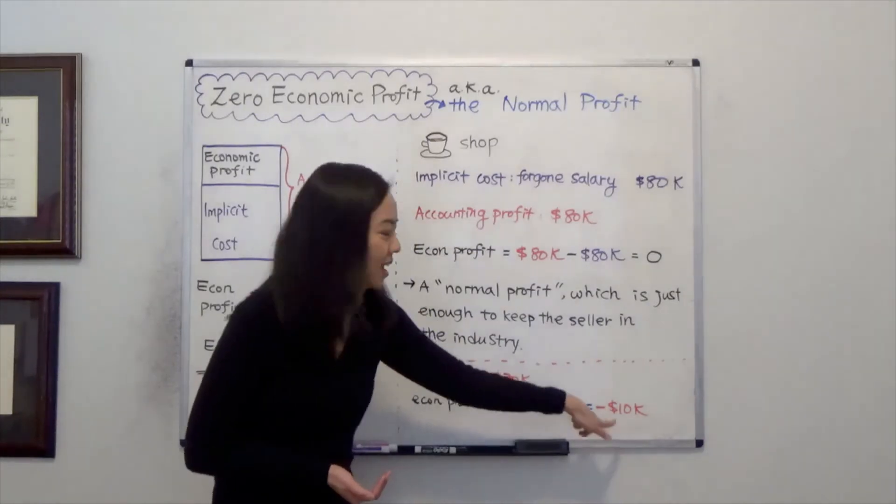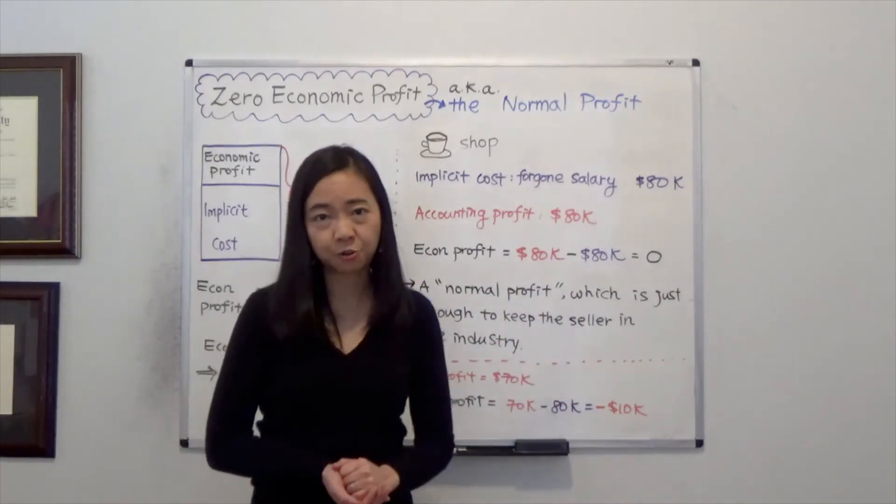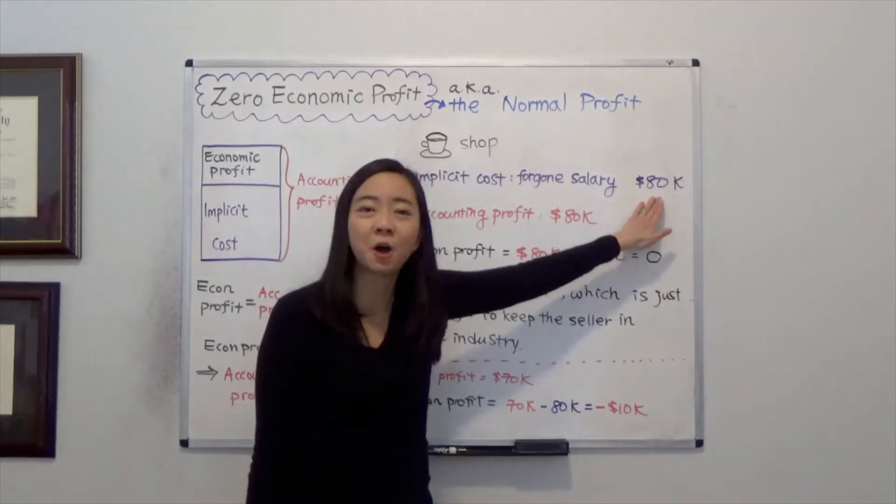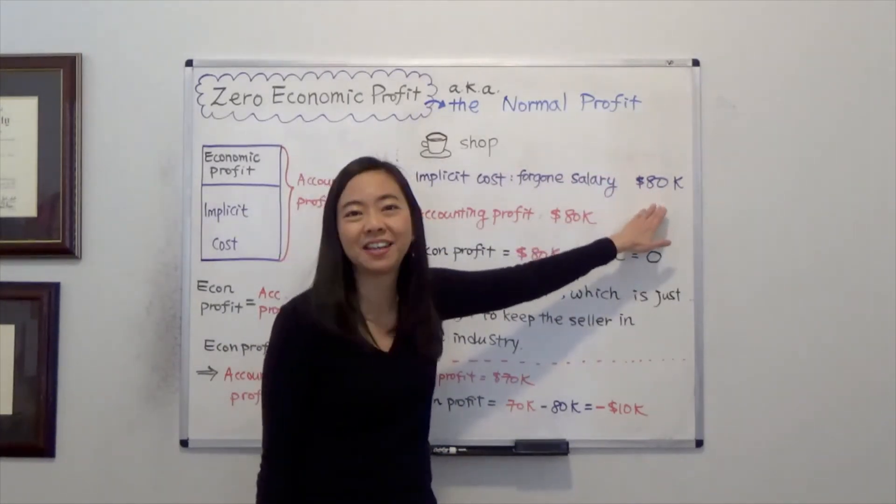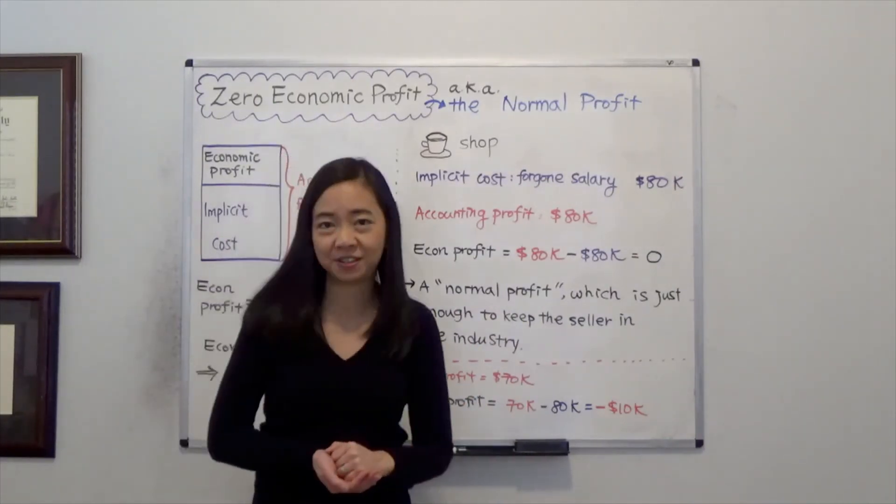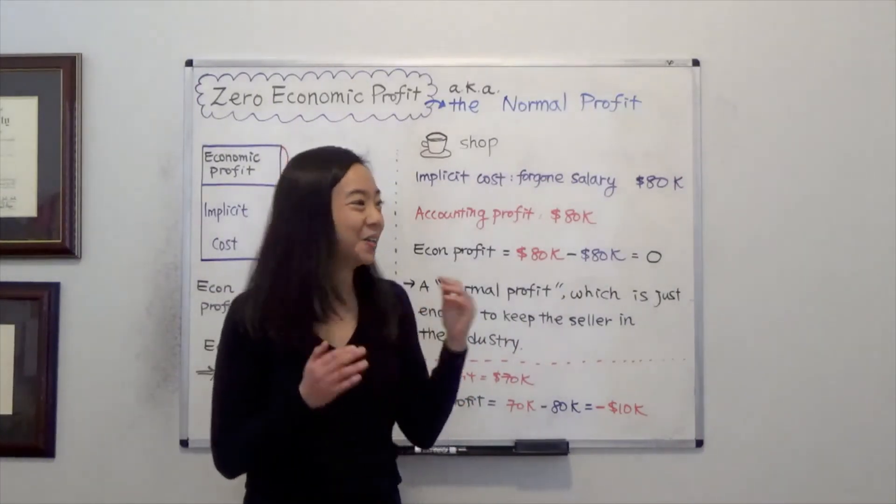What does that mean? That means you are better off serving as an engineer and getting your salary of eighty thousand dollars. That will be better than operating your coffee shop which gives you only an accounting profit of seventy thousand dollars.